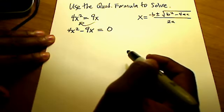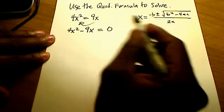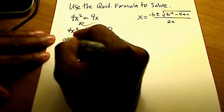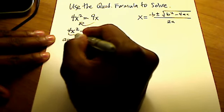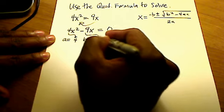I need to pick off what a, b, and c are because that's what's needed in my formula over there for the quad formula. So I need to know what a is. That's just the coefficient 4, and b is that coefficient of negative 9.